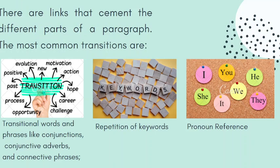There are links that cement the different parts of a paragraph. The most common transitions are transitional words and phrases like conjunctions. Conjunctions are words that connect phrases, clauses, and sentences. The most common is the FANBOYS: for, and, nor, but, or, yet, so.